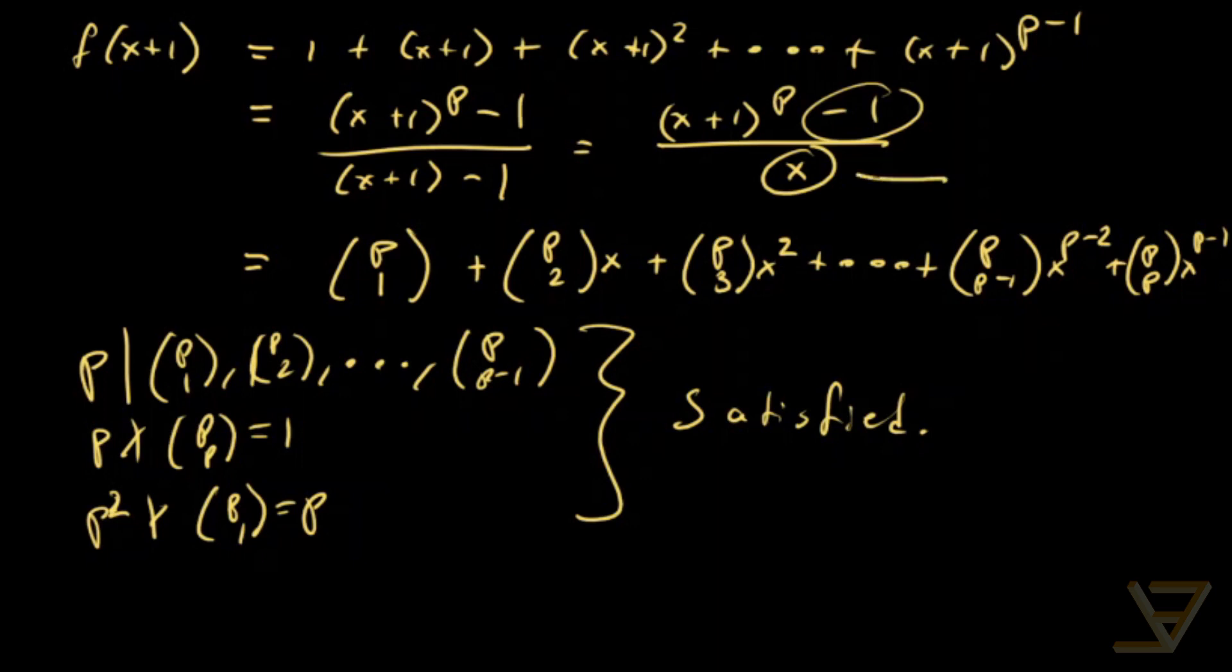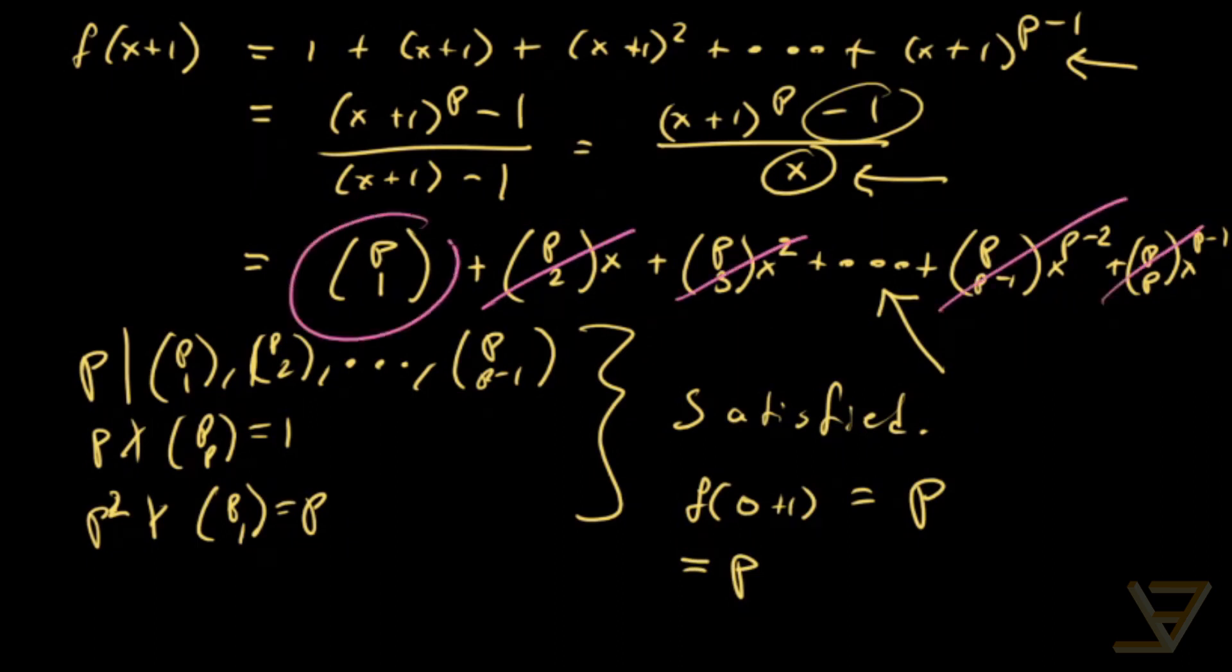And I just want to address the x equals zero part briefly. And that is okay as well, because f(0+1), so we're subbing in 0 for x. If we sub it in here, we get p terms equal to 1, so it's just equal to p. And if we put it in here, then we also get that it's equal to p because all other terms cancel out. We have a factor of 0 there, so we just get (p choose 1), and it still works in that case.